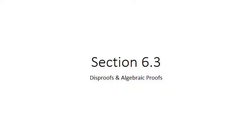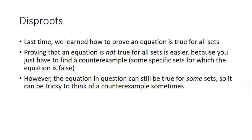We'll start with section 6.3: disproofs and algebraic proofs. Last time we learned how to prove an equation is true for all sets. Now if you want to prove that an equation is not true for all sets, that's actually easier, because all you have to do is find a counterexample — some specific sets for which the equation is false. Keep in mind the equation could still be true for some sets, even most sets, just not for all sets. So it can be tricky to think of a counterexample sometimes.